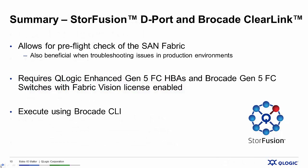In summary, d-port and Brocade Clearlink provide you the ability to do a pre-flight check of a SAN fabric before you put it into production. This can also be very beneficial in reducing the amount of time spent troubleshooting if you've got issues in your production environment as well. To enable this functionality, it requires Q-Logic enhanced Gen5 Fibre Channel HBAs and Brocade Gen5 Fibre Channel switches with Fabric Vision licenses enabled. We executed this demonstration using the Brocade CLI, and this can be scripted using scripting tools so you can run it in an automated fashion across your environment.